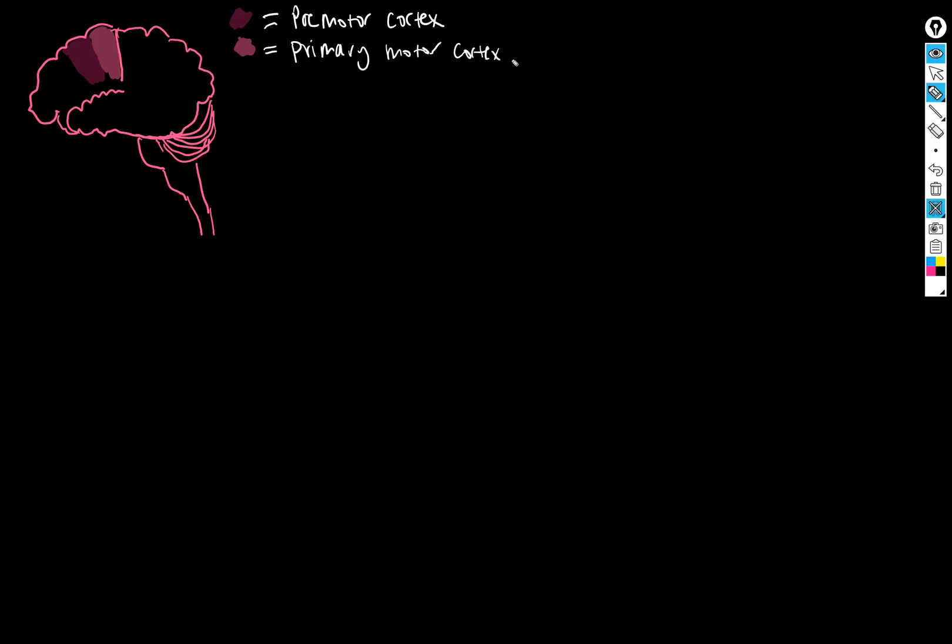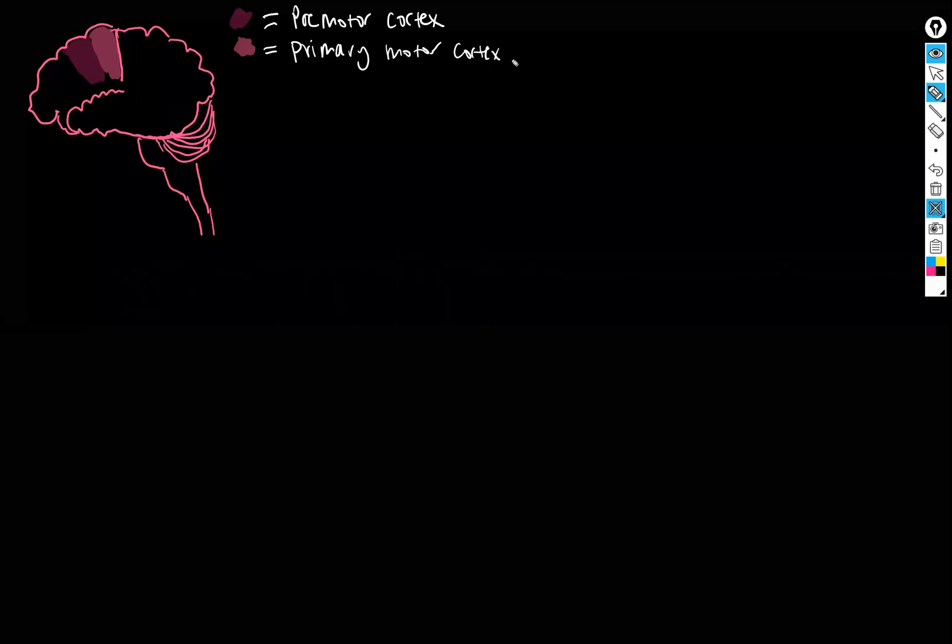Okay, so the pre-motor cortex is the location where motor programs are made. Motor programs meaning - think about a really simple motion. If you really think about it, no motion is simple, which is why I'm having a hard time thinking of one.